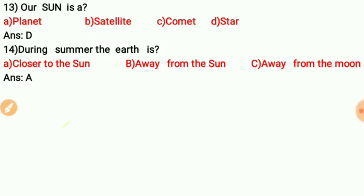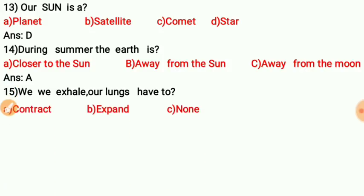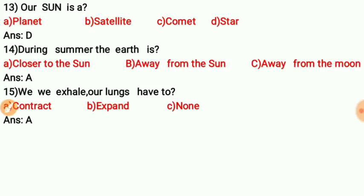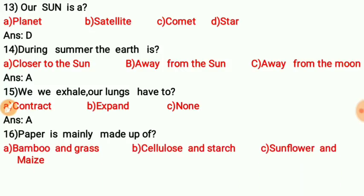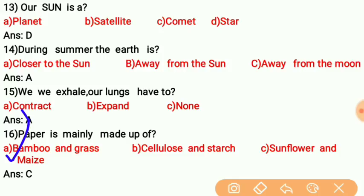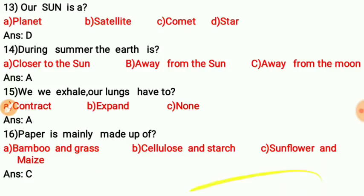Question fourteen: When we exhale, our lungs contract or expand? Question fifteen: Paper is mainly made up of what? The correct answer is A — bamboo and grass. Paper is mainly made up of bamboo and grass.